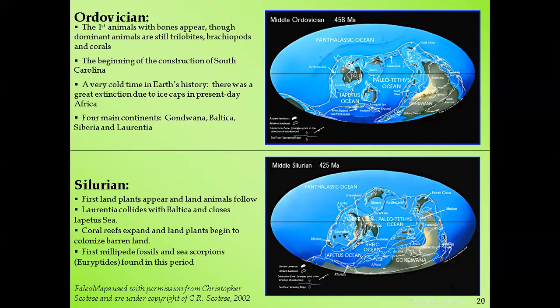Under the Ordovician, about 458 million years ago, the continents had also changed — they were slowly moving. The first animals with bones appeared, meaning vertebrates existed, though the dominant animals were still trilobites, brachiopods, and corals. There was a great extinction due to ice caps in the present-day Africa — organisms like trilobites and brachiopods became extinct because of the glaciation.